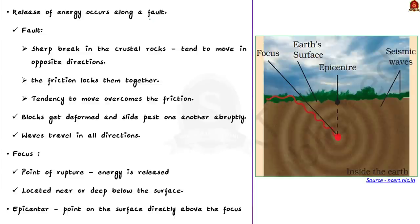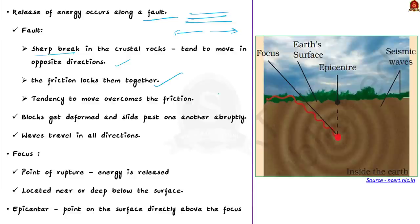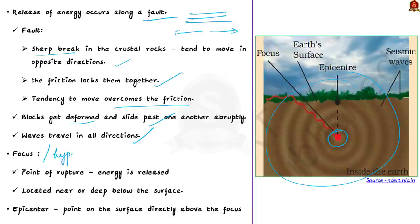A fault is a sharp break in the crustal rocks. Rocks along a fault tend to move in opposite directions because the overlying rock strata presses them. Friction locks them together, but their tendency to move eventually overcomes this friction. As a result, the blocks get deformed and slide past one another abruptly, releasing energy whose waves travel in all directions. The point of rupture where energy is released is called the focus or hypocenter. The point on the surface directly above the focus is the epicenter.